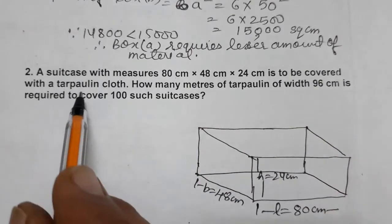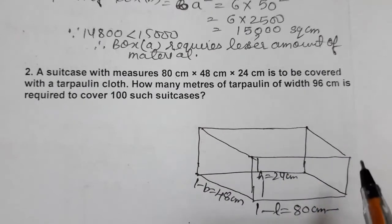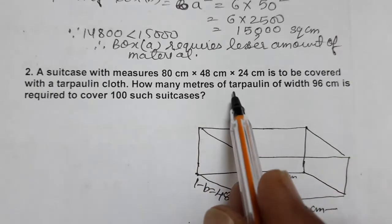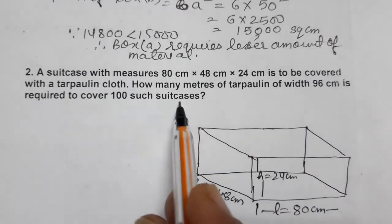This is to be covered with tarpaulin cloth. How many meters of tarpaulin of width 96 cm is required to cover 100 such suitcases?